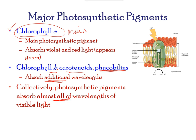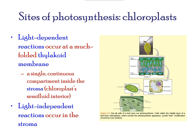Reactions take place in the grana of thylakoids, which are present within the chloroplasts. Cells on the surface of leaves carry out maximum photosynthesis.